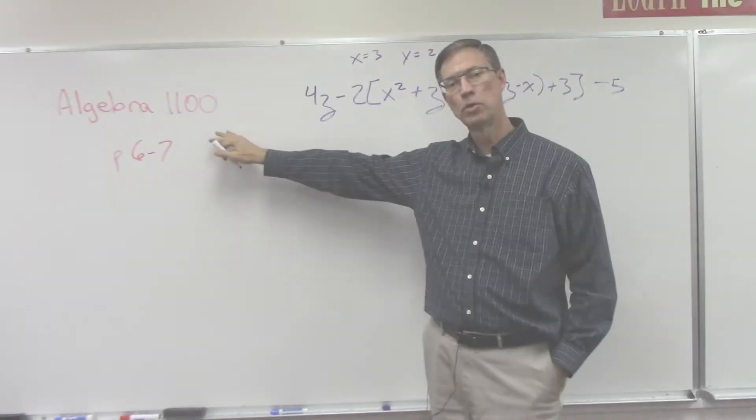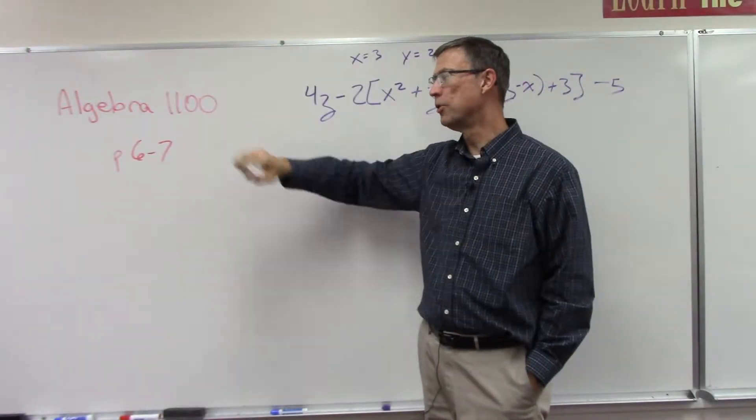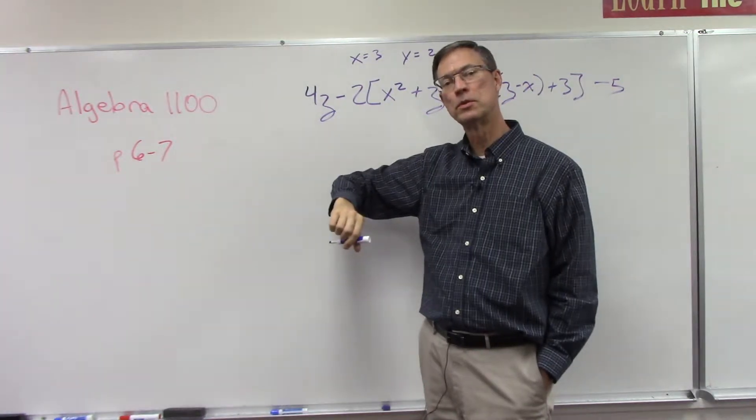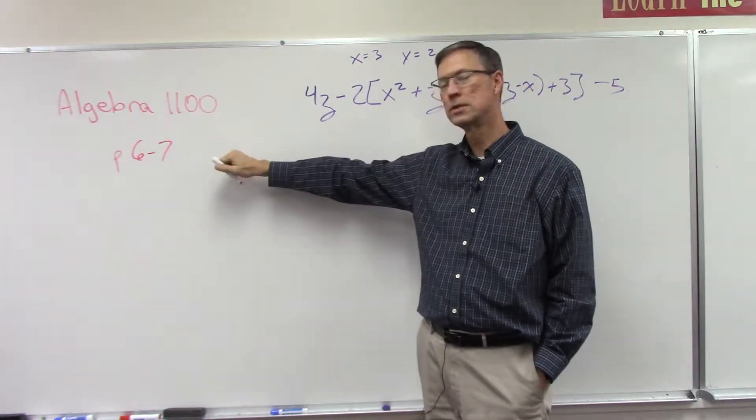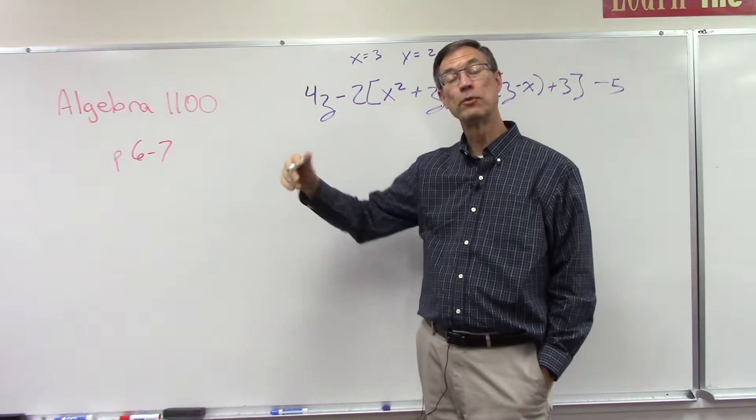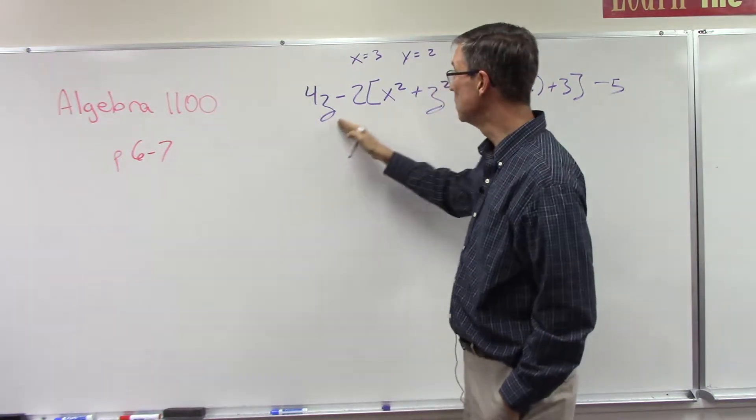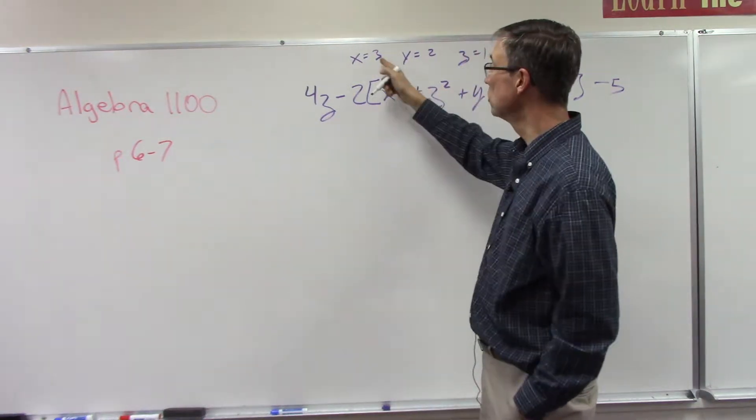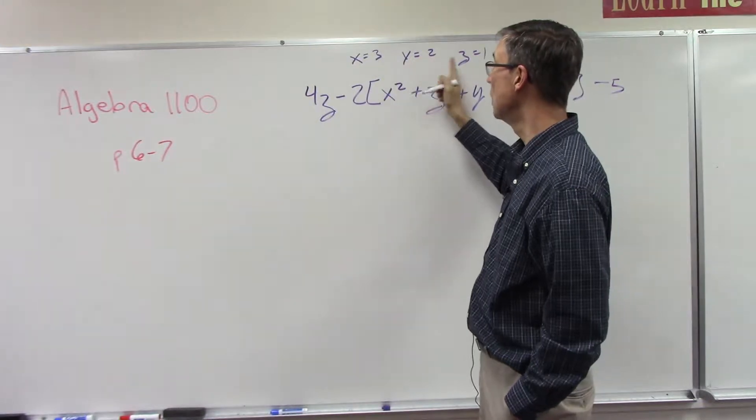All right, another video from the fourth pace in the Algebra 1100 series, pace 1100. We're looking at pages 6 and 7, and what's different here is we have these variables but we also are given the value of three of the variables.